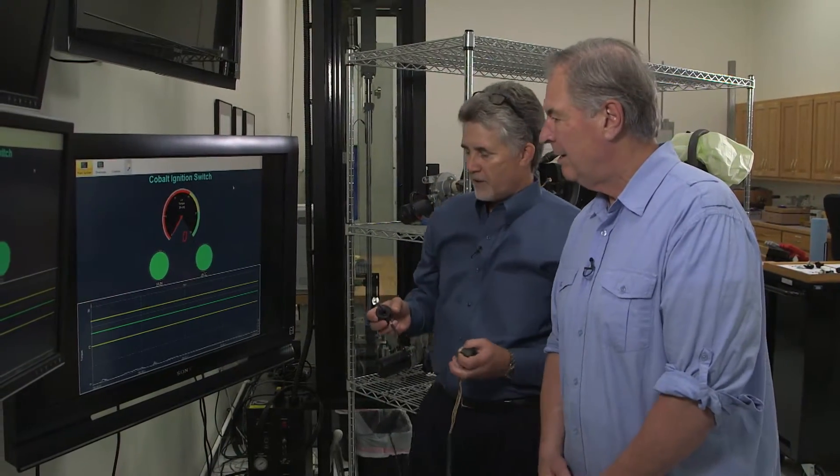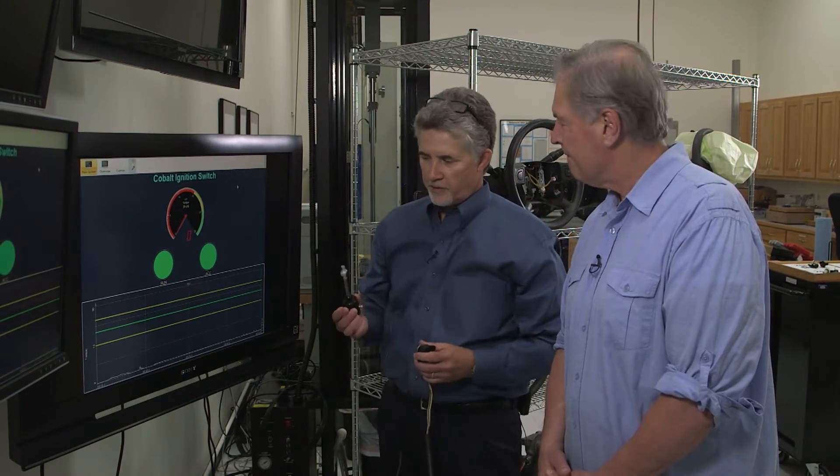This is a demonstration which we've put together using a torque cell and a digital data acquisition system to show the difference in the torque on a 2006, in this case, a 2006 Cobalt switch and a new replacement switch.